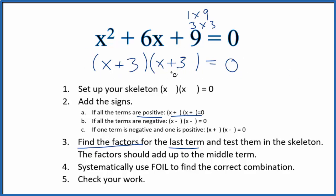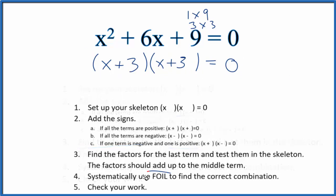So now we can check and see if this is correct. We use the FOIL method to do that. For the first term, x times x, that gives us x squared. Then we do the outside. x times 3, that's 3x.